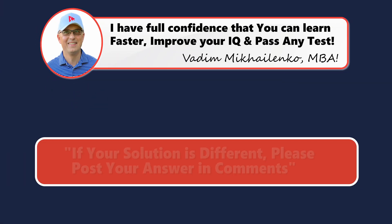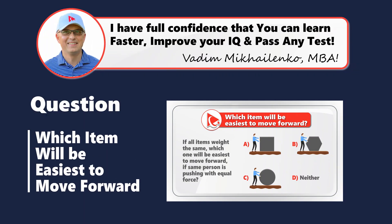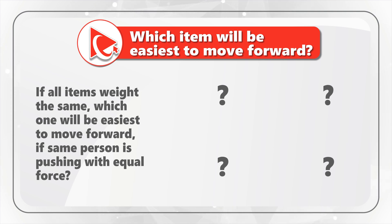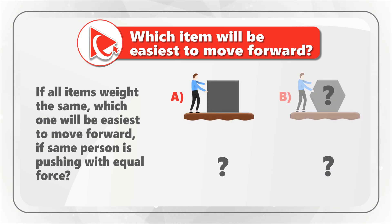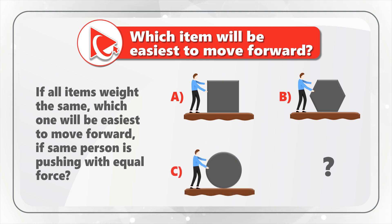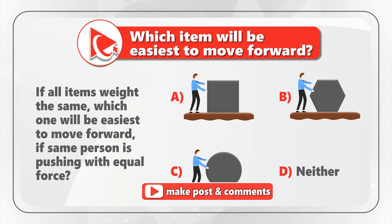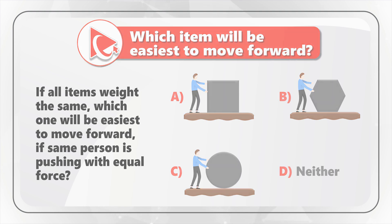Did you get a different answer? Please make sure to post your answer and solution in comments. Here's an amazing question to test your knowledge of mechanical movement of objects. You are presented with a picture of a person moving an object, and you need to determine which one will be easiest to move forward if all objects weigh the same and the same person is pushing with equal force. Let's analyze all shapes individually to better understand the answer.